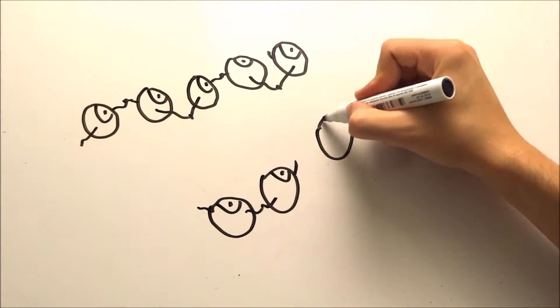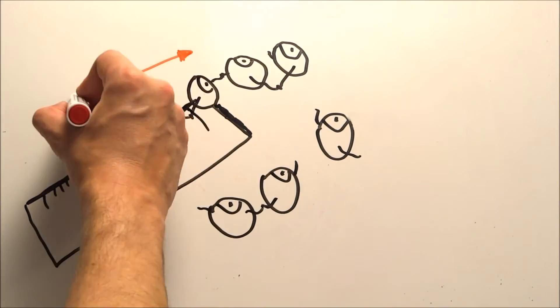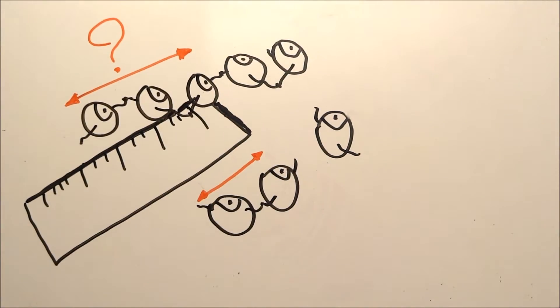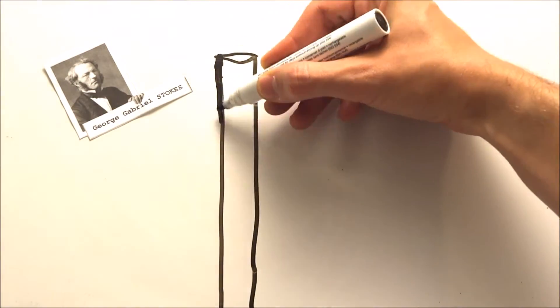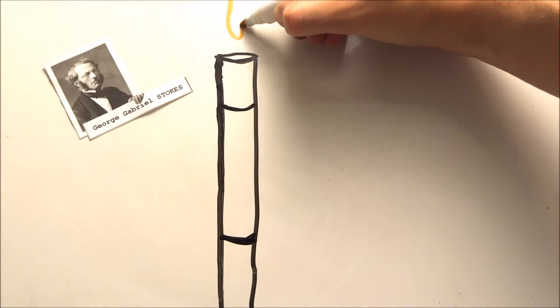But how can we measure the viscosity? We can't really measure the length of the bonds, it would be too complicated and too long to do. During the 19th century, a guy named George Gabriel Stokes did a lot of work on fluid dynamics. And with other scientists, they set up a simple way to measure the viscosity.